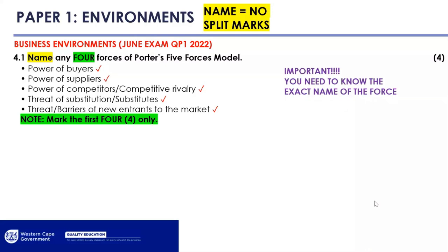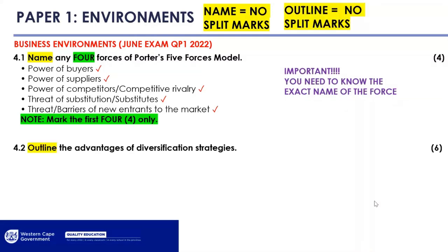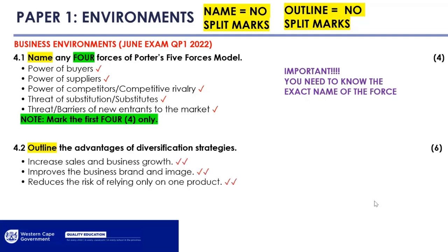Outline — not too much depth, but write a brief explanatory sentence so you can get the two marks at the end of each fact. For outline for six marks, that's three points in your answer. The advantages of diversification strategies — it's a growth strategy. Write a brief sentence that makes sense and you get your marks.